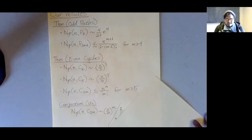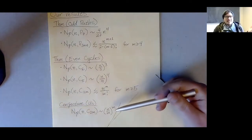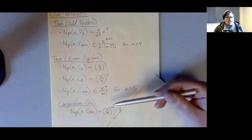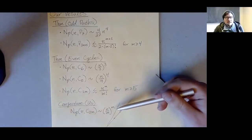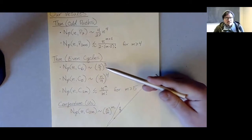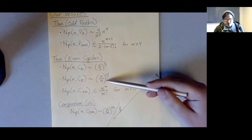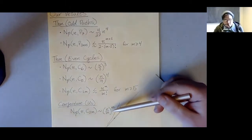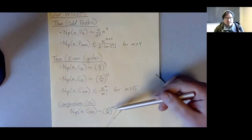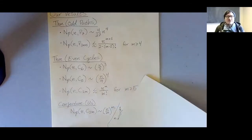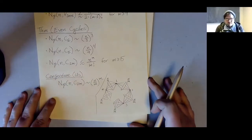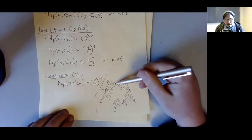We have a conjecture — I'll attribute it to us since I haven't seen it in the literature — that the pattern we see for 6-cycles and 8-cycles should continue for all 2m-cycles. The answer for the maximum number of cycles on 2m vertices should be (n/m)^m. This comes from the following construction: start with an m-cycle with vertices 1 through m, and blow up each edge into an independent set of size n/m.